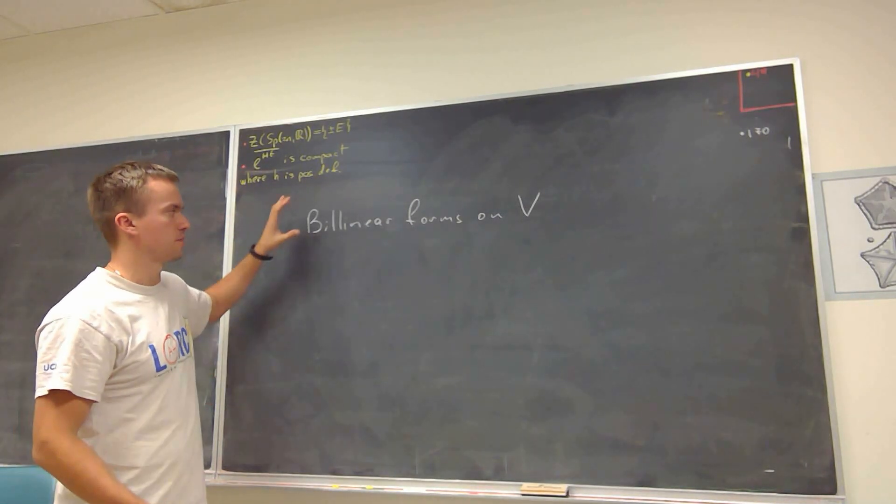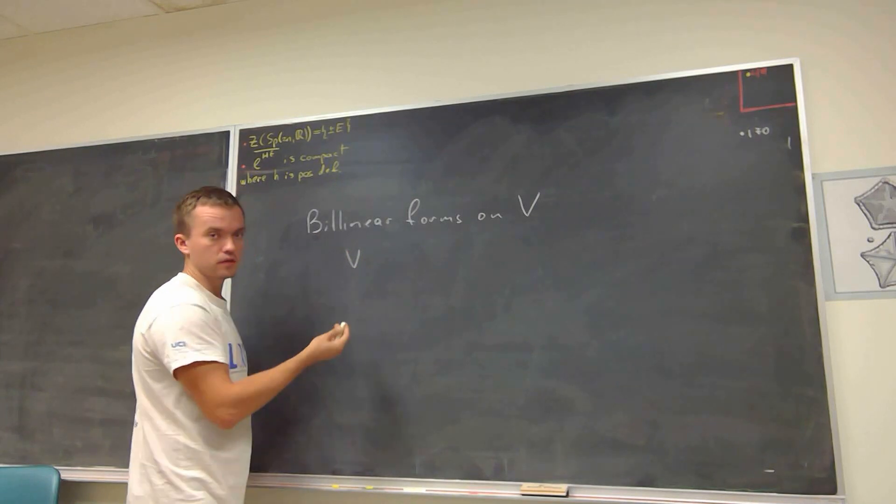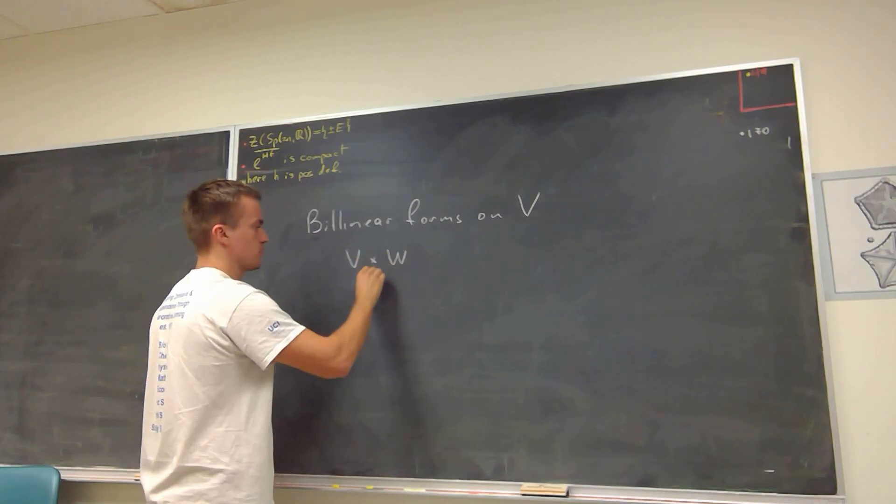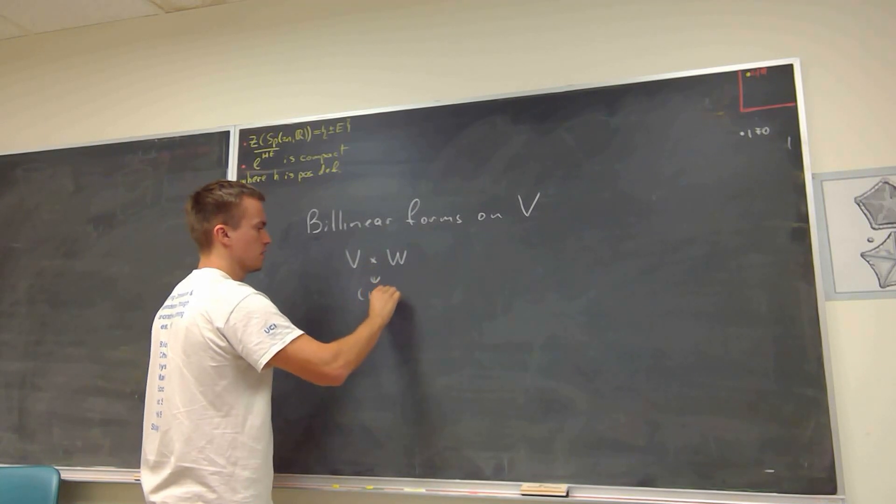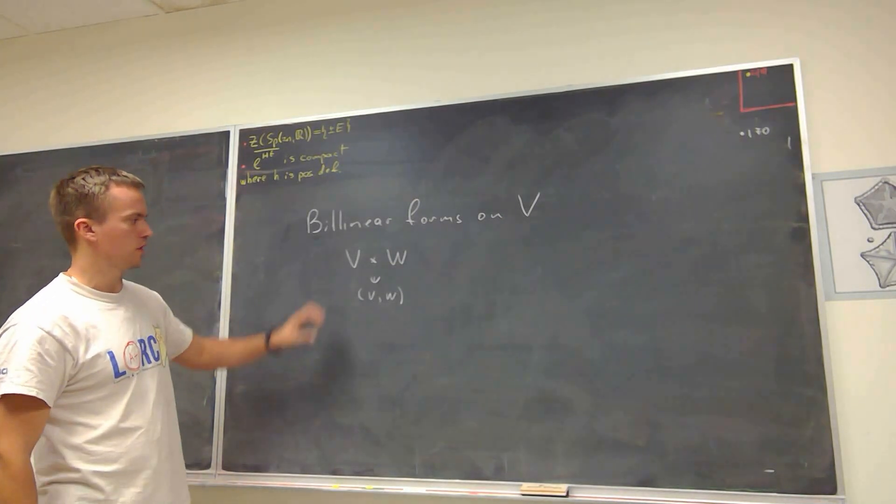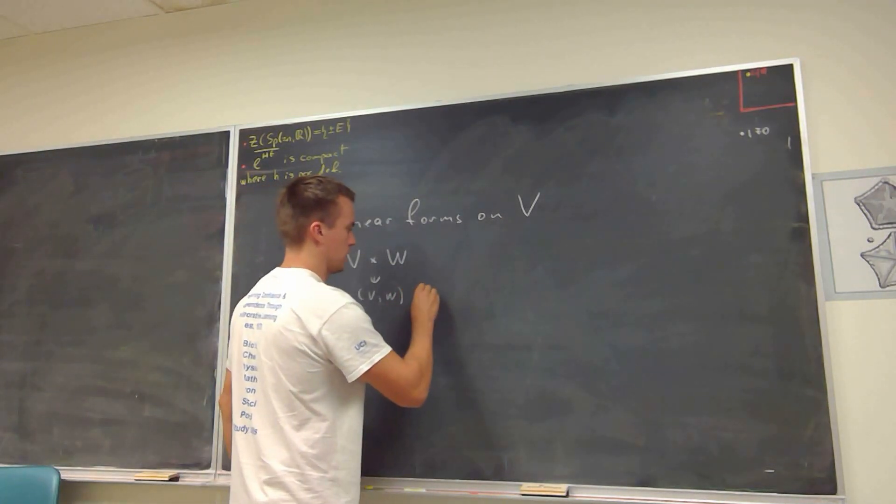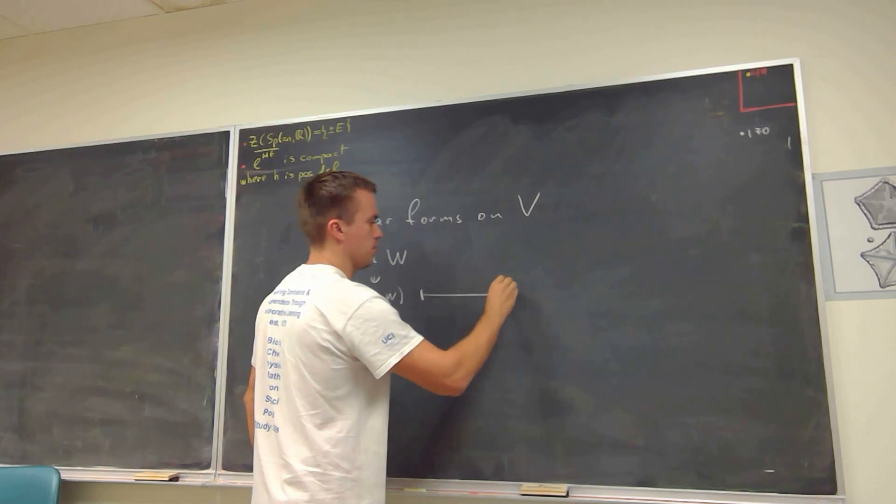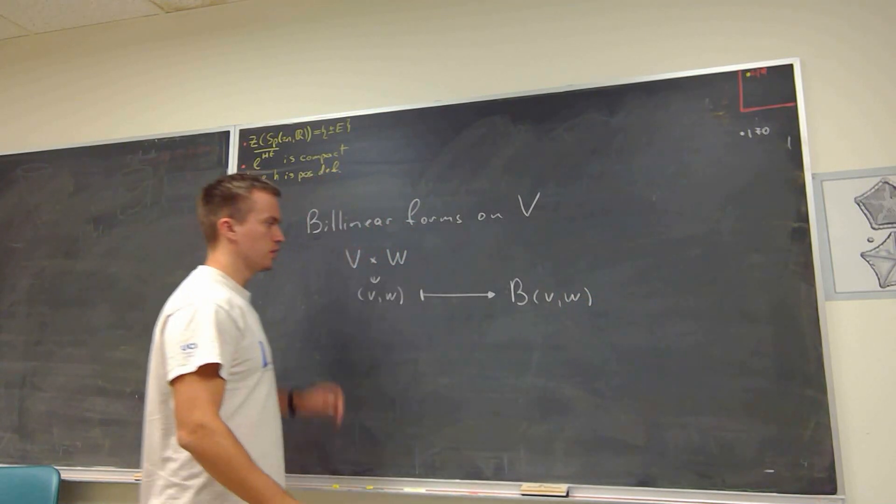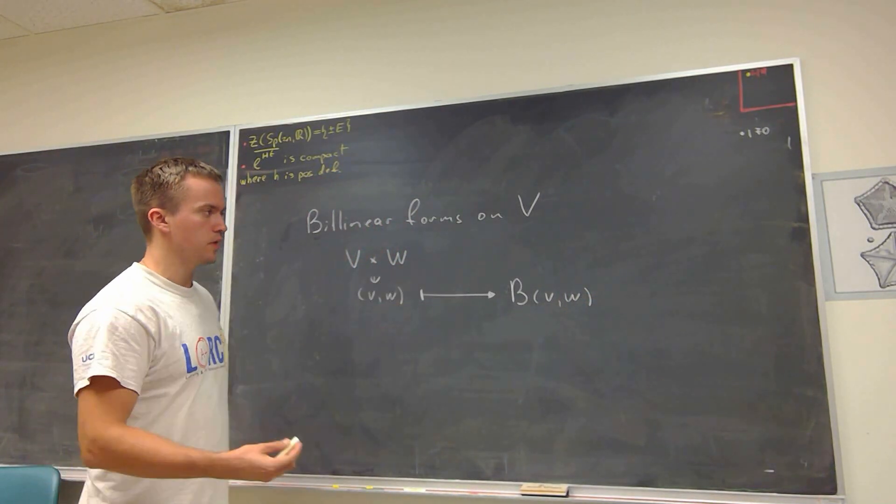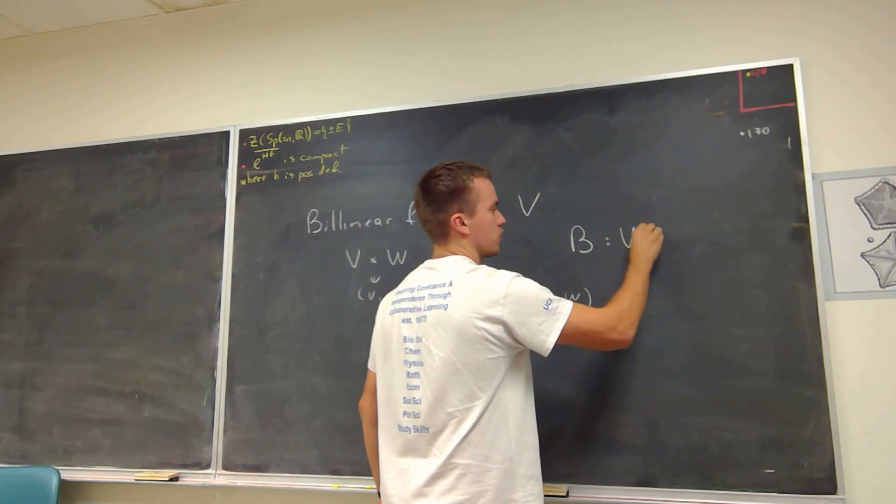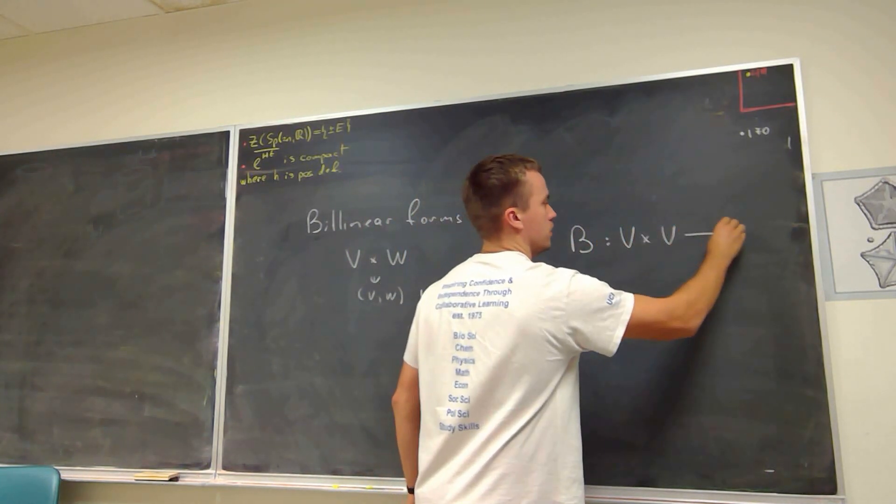But sorry, something similar, but instead of taking one element in your vector space, we're going to take two elements. So basically we're going to take a pair of vectors V and W, and for this pair of vectors V and W, we're going to assign some number. And that number we're going to call, let's say, B of V and W. So in other words, B is going to be a bilinear form, where B is going to be the map from V cross V into R.